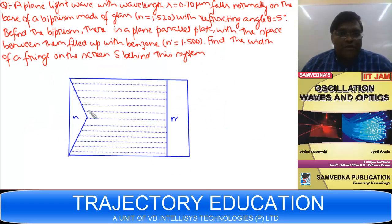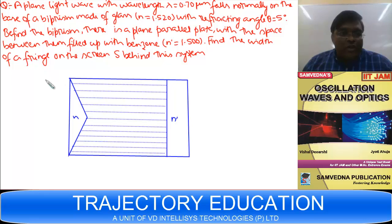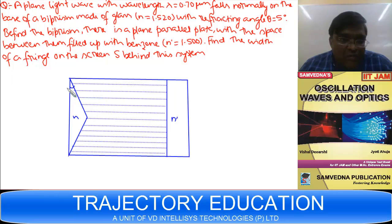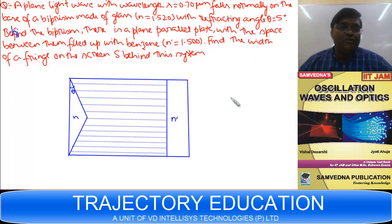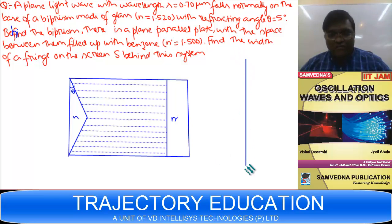Now let's do a question on Fresnel Biprism. A plane light wave with wavelength λ = 0.70 μm falls normally on the base of a biprism made of glass with refractive index N = 1.520 and refracting angle θ = 5°. Behind the biprism there is a plane parallel plate, and the space between the plate and the biprism is filled with benzene.